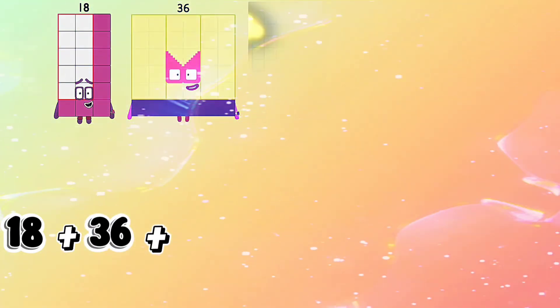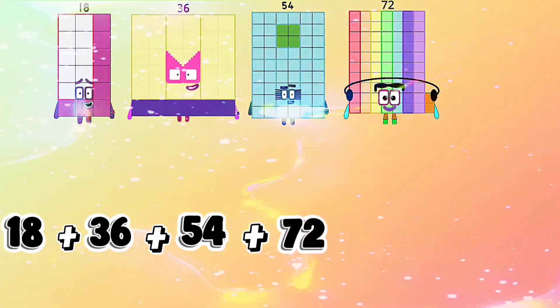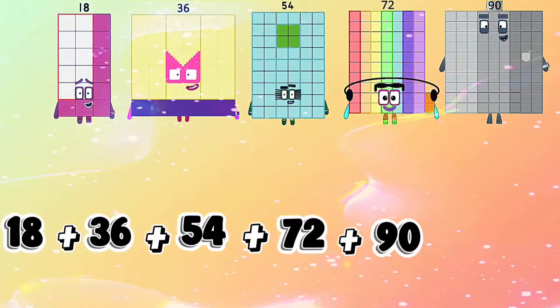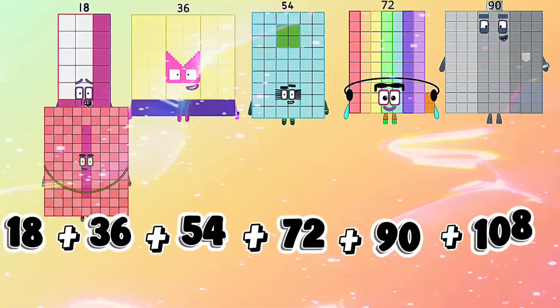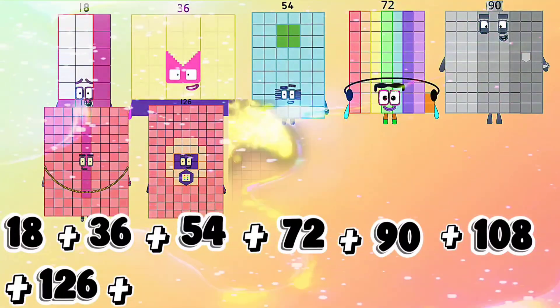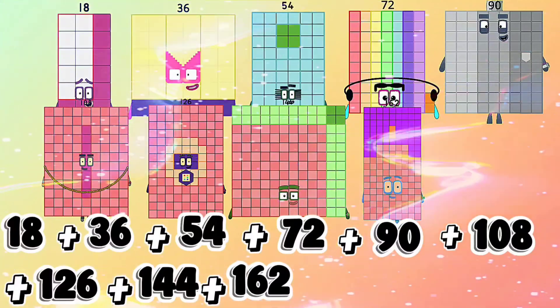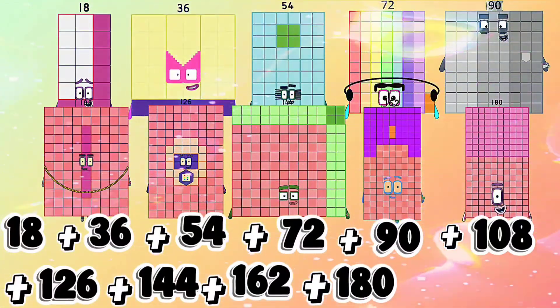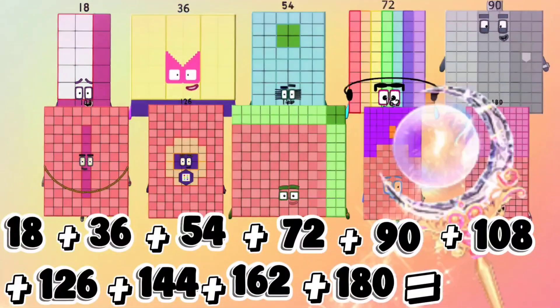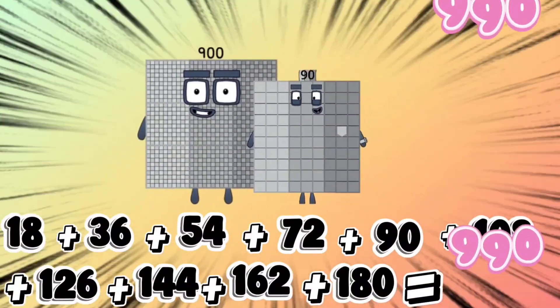18 plus 36 plus 54 plus 72 plus 90 plus 108 plus 126 plus 144 plus 162 plus 180 equals 990.